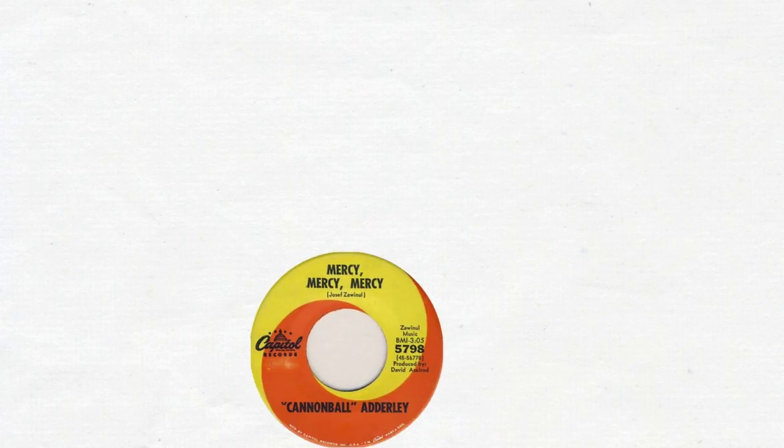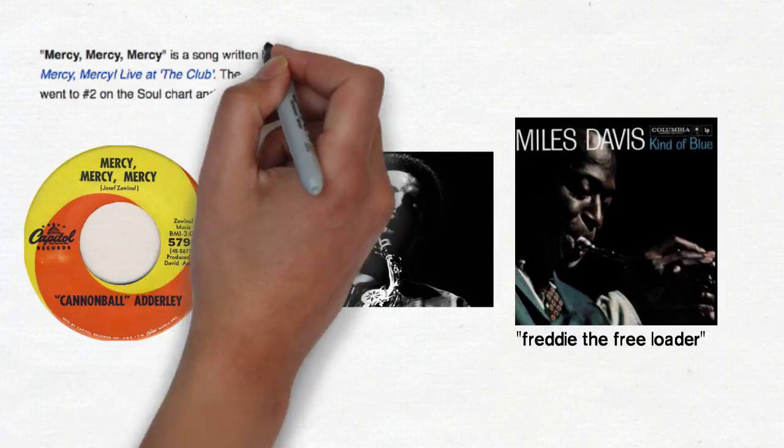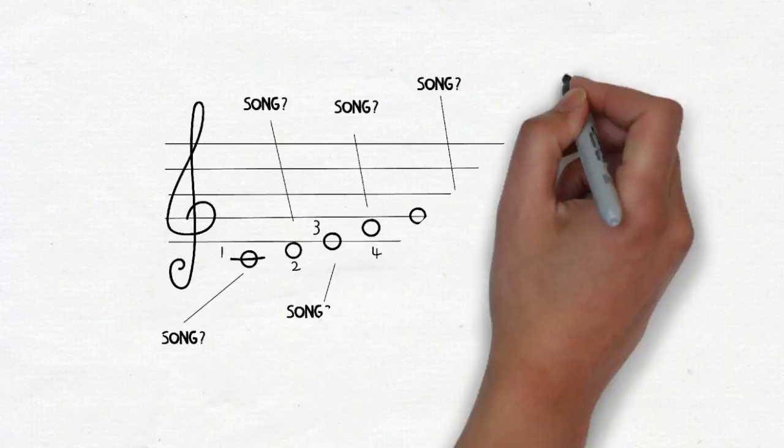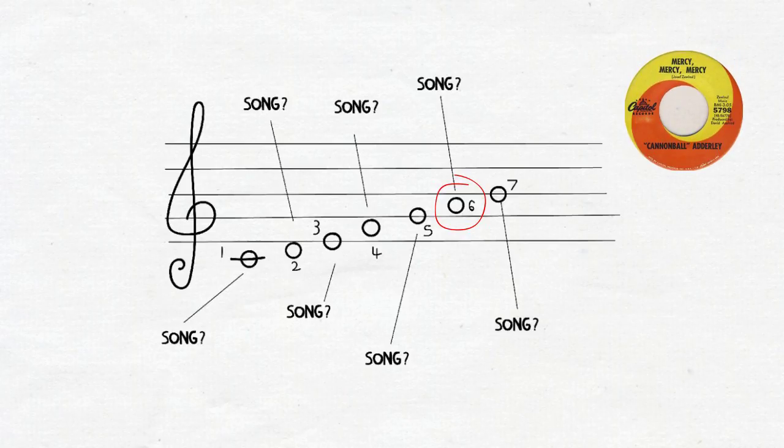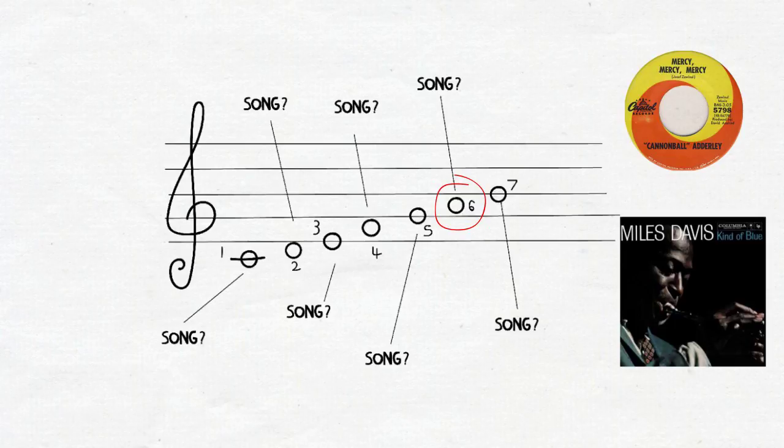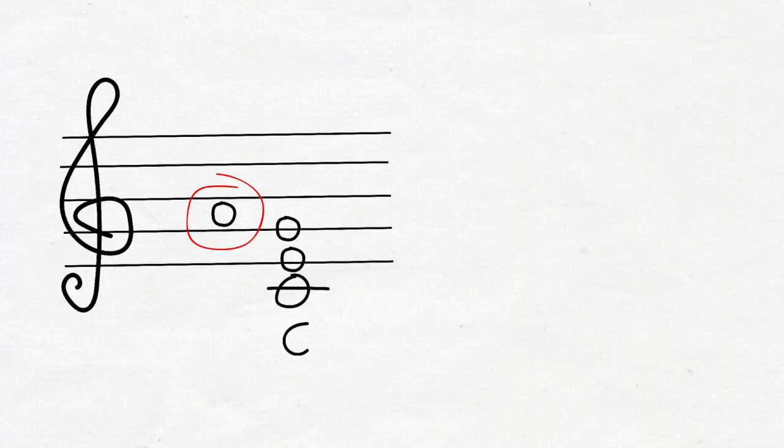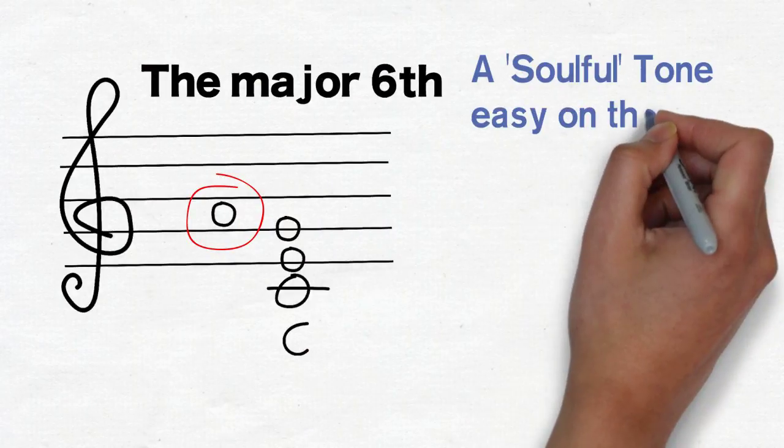Okay, what do these two tunes have in common? Well, the answer is not that they are both two killer jazz songs. The answer that I am looking for is that they both start on the sixth degree. Let's check them out again. Here's the sound on the piano. You can hear that the sixth wants to resolve down to the fifth.